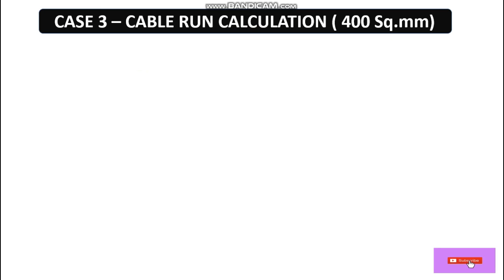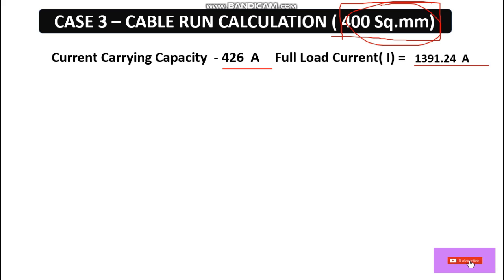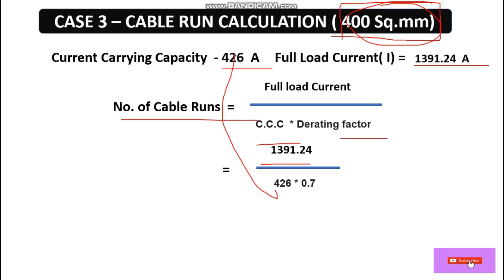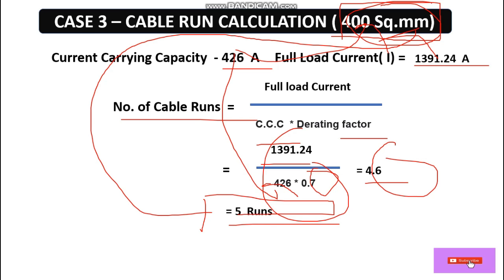Case 3: Let's decrease the size further to 400 square mm. From the cable catalog, the current carrying capacity of 400 square mm is 426 ampere. Full load current is 1391.24 ampere. Number of cable runs = 1391.24 / (426 × derating factor) = 4.6 runs, so 5 runs are required. For 400 square mm cable, 5 runs are needed.